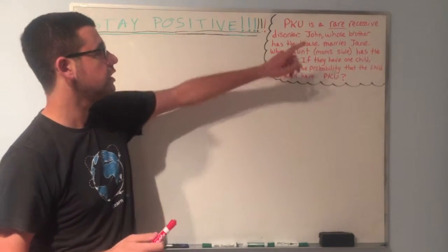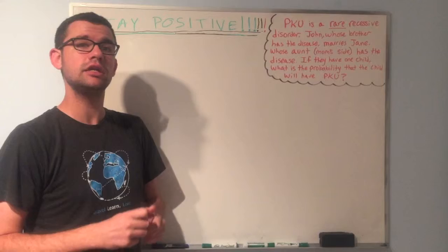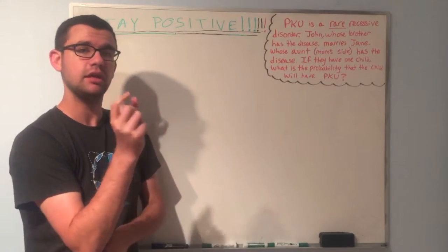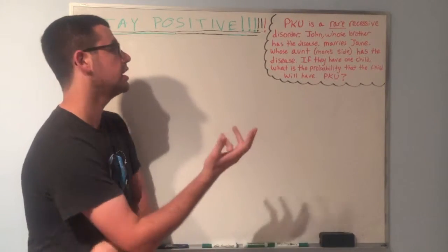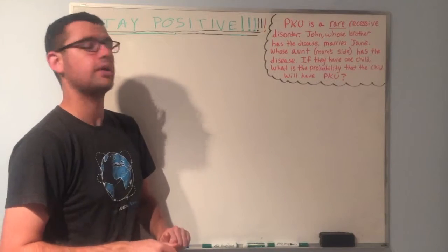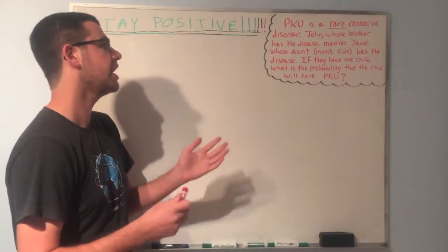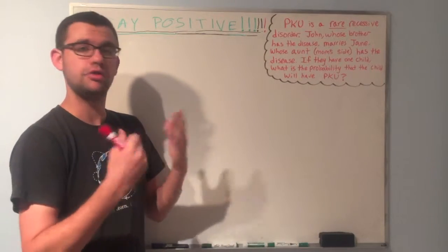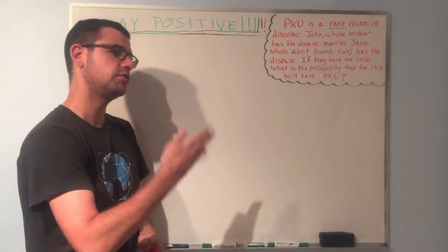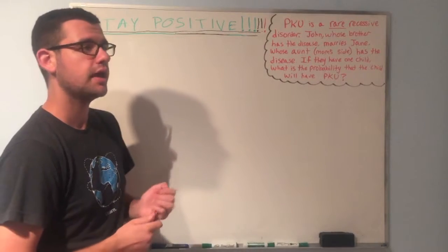So the first thing to note is that it is a recessive disorder, meaning you need both recessive alleles in order to express PKU. In other words, we're going to use big A and little a, just for simplicity's sake. So big A meaning the dominant allele, don't have PKU. And if you have two little a's, then you do express PKU.